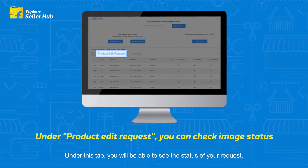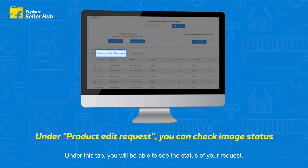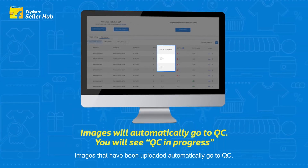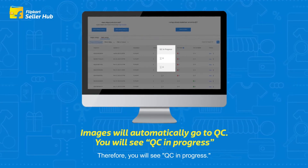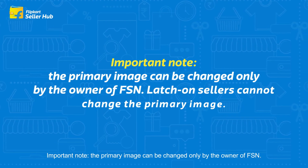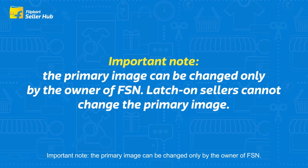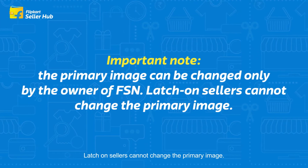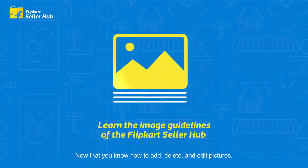Your request will be shown under Product Edit Request. Under this tab you will be able to see the status of your request. Images that have been uploaded automatically go to QC, so you will see QC In Progress. Important note: the primary image can be changed only by the owner of the FSN — latched-on sellers cannot change the primary image.